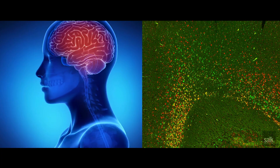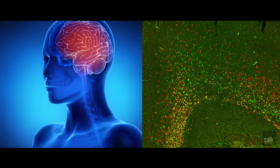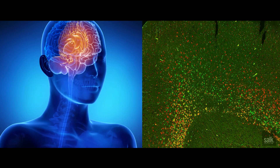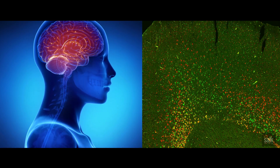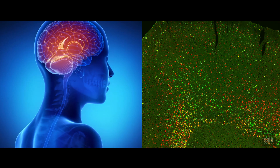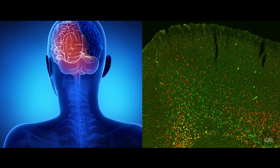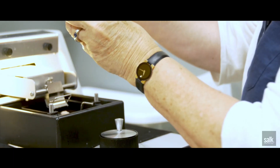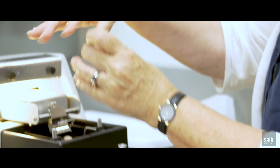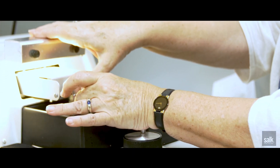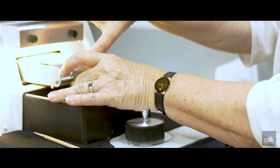Our study compared the cortex of the mouse and human in an unbiased way, looking at the different neurons in the different layers of the cortex. What we found was that we could match the cell types from mouse to human, but there are actually more cell types in the human brain — it's a bit more complex.